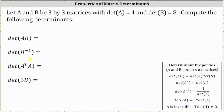First, we have the determinant of the product of A and B, which is equal to the determinant of A times the determinant of B, which is equal to four times eight, which is 32.